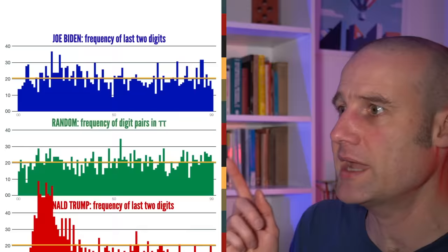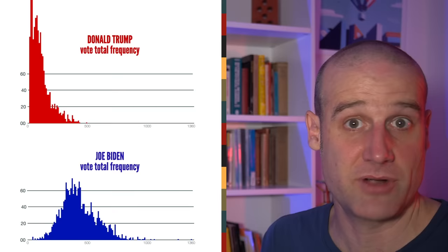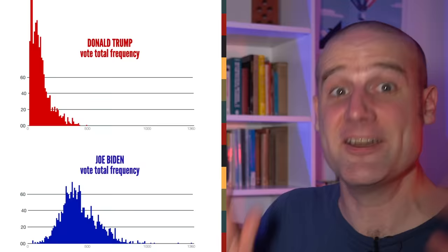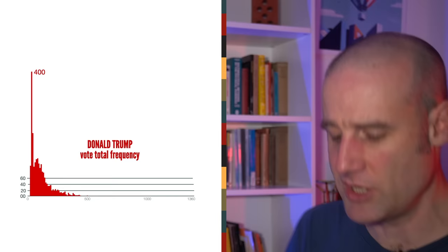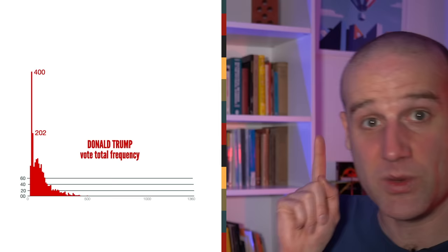So if we go back to the distribution of the vote totals for Biden, which I did earlier. I ran the same analysis for Trump. And you get this. It's a huge spike. A full 400 of the precincts, that's roughly a fifth of them, Trump got between 10 and 19 votes. There's 202 between 20 and 29.